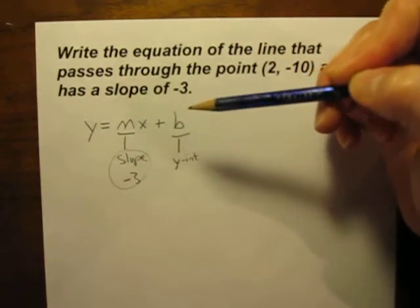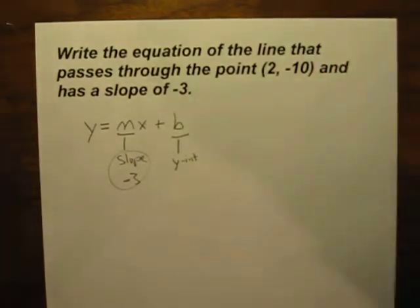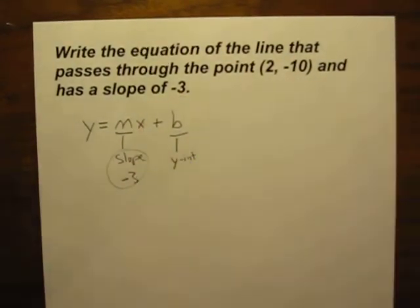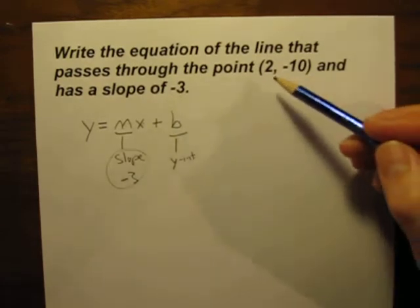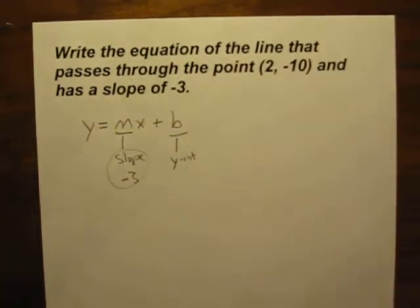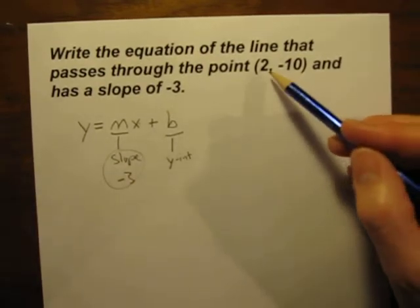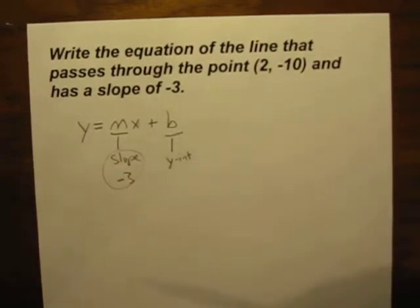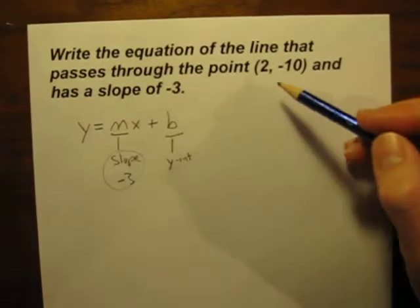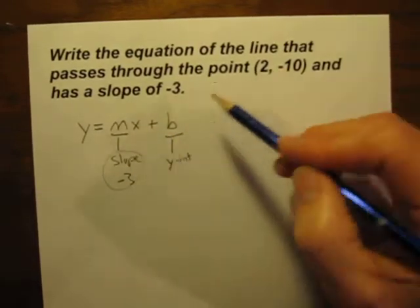We know that the m, the slope, is negative three. Where can we get an x and a y? Where can we find those? Well, if you look back at the problem they give you two other numbers, so that should be a little bit of a clue.